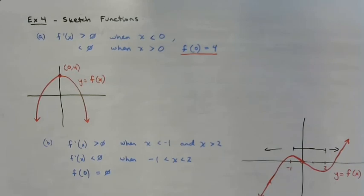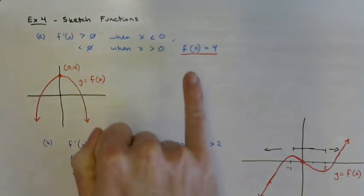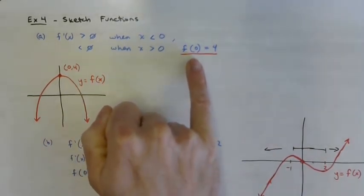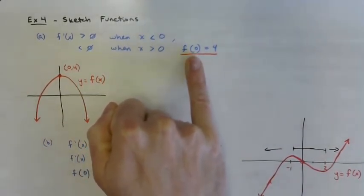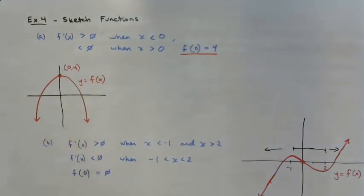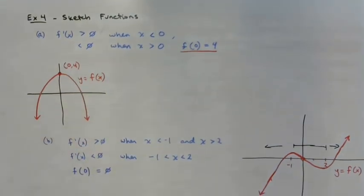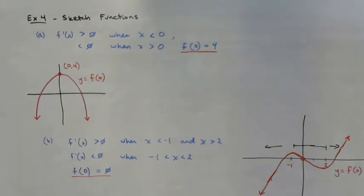The whole lesson was about relating the slope of any function f to its derivative and the sign of the derivative within certain intervals using key points, so you can sketch graphs. In example four, a specific point on the original function was given, allowing a more accurate sketch of the original function from the derivative.